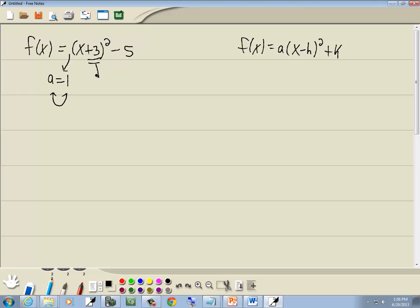Now our h is going to be the number that's inside of the x in its opposite sign. So h is going to equal negative 3. And our k is the number at the end, and it stays whatever sign it was. It was negative 5, so it stays negative 5.